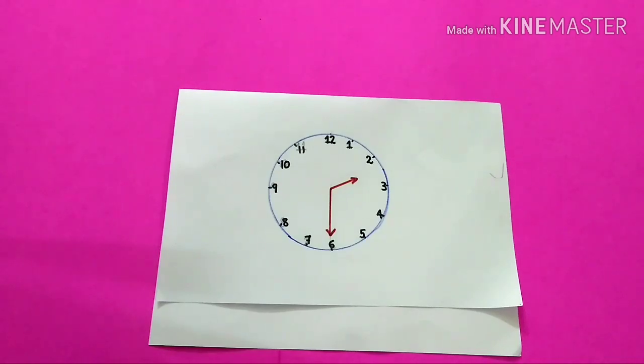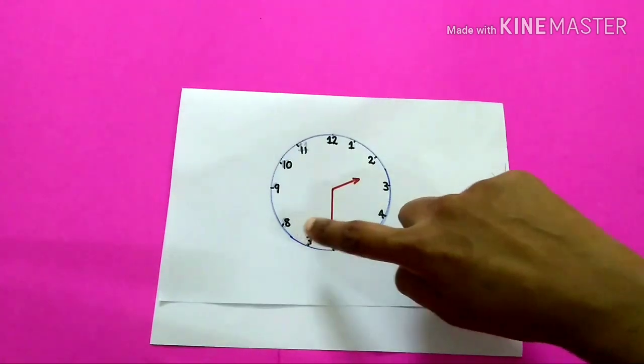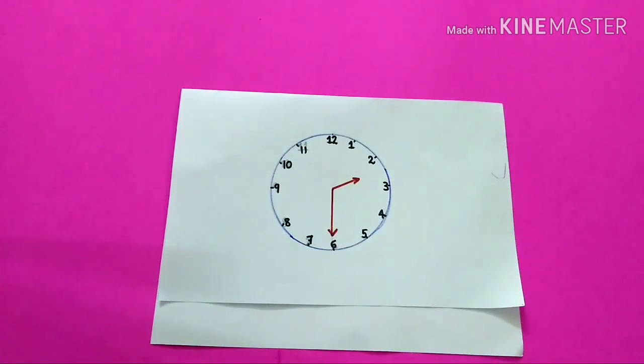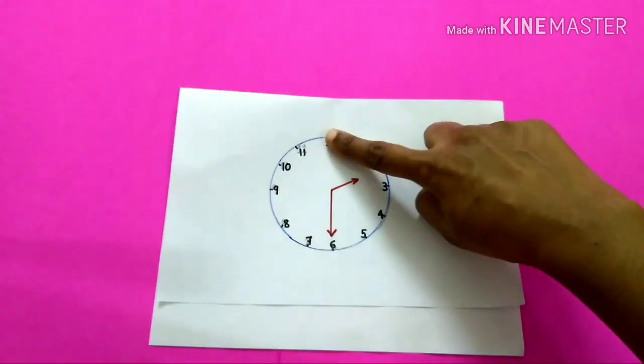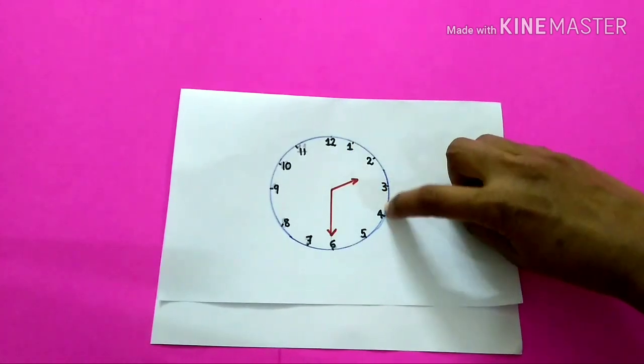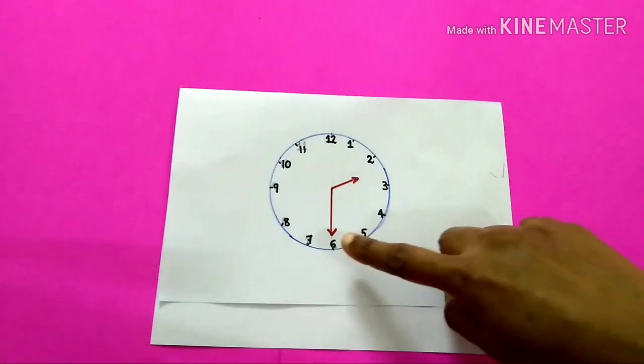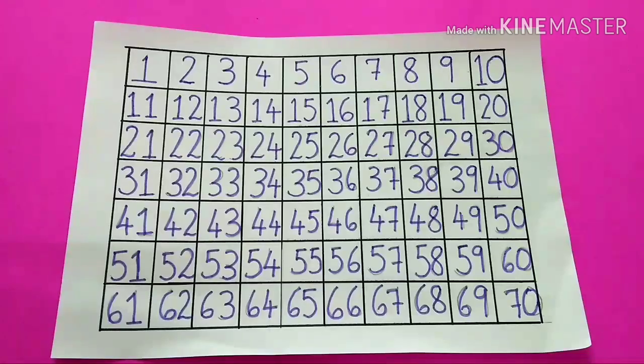Second, telling time. While telling time, we skip count by 5s to find out the time. For example, if the time is 2:30, we will start counting from 0 and skip count by 5 until you got the minute hand on the 6.